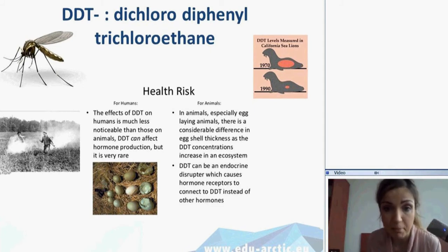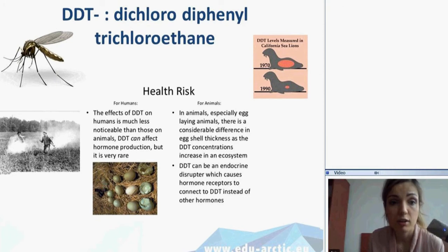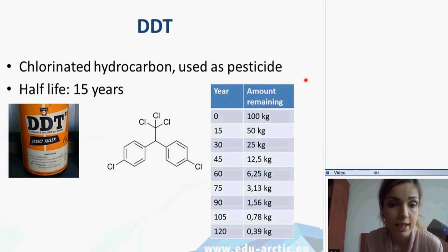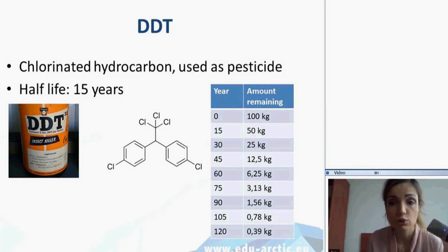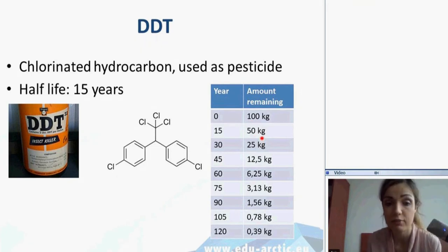DDT also easily becomes embedded in fat stored in animals and can remain there for many years. This distinguishes these toxins — they're left in the environment and in tissues for many years. DDT is a chlorinated hydrocarbon with a half-life of 15 years, meaning that if you use 100 kilograms of DDT, after 15 years 50 kilograms still remain in the environment. So it has dangerous long-term effects.